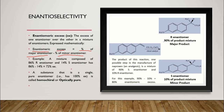For example, if a mixture is composed of 86% R and 14% S enantiomer, then it has an enantiomeric excess of 86 minus 14, which is 72%, expressed as EE. When a substance is a single pure enantiomer, it has an enantiomeric excess of 100%, which is called homochiral or optically pure.